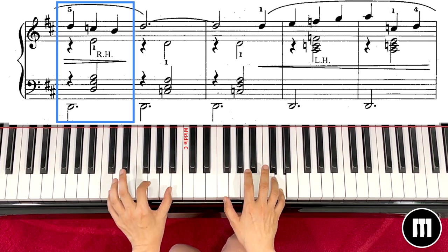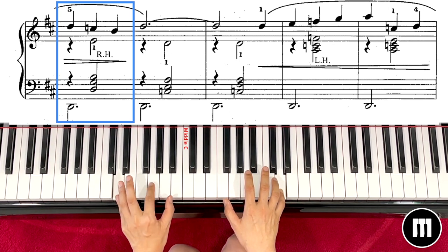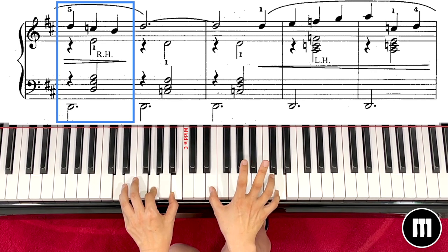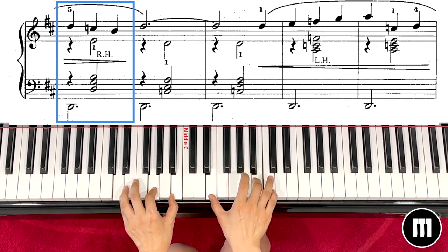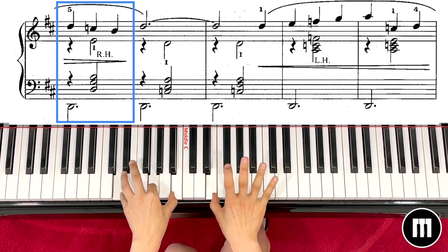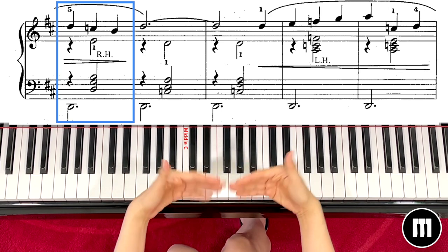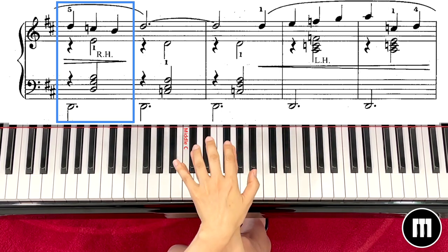And now this time your left hand will play D G B, right hand E half note, means you have to hold it longer. But when you play B, you have to keep holding those bottom three notes so the sound will be accumulated.